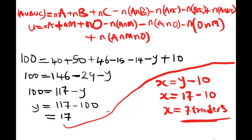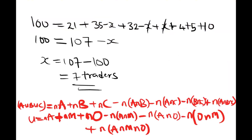Comparing our two solutions — the formula method and the Venn diagram method — we arrive at the same answer of 7. So whichever solution you feel is better, you can go with it. Thank you for watching our video.